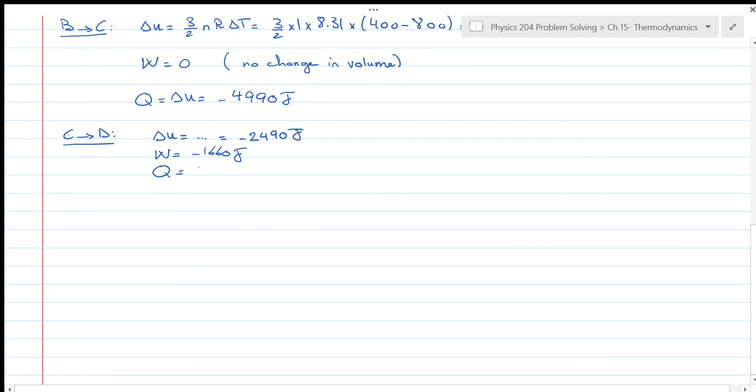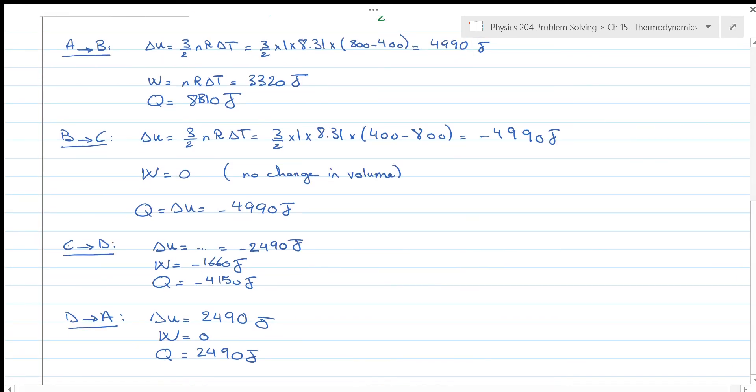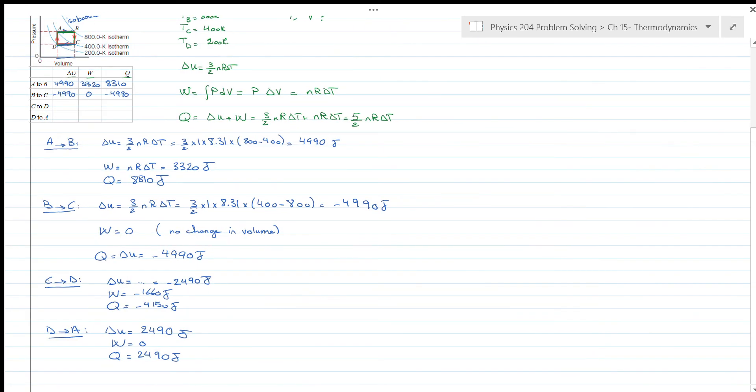And finally, from D to A, delta U will have a value of 2,490 Joules. The work done will be zero because this is an isochoric process, and Q will be 2,490 Joules as well. So we're able to calculate all the variables along with their signs.